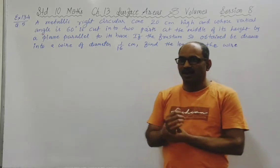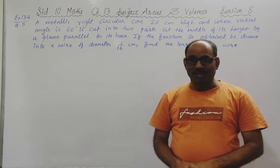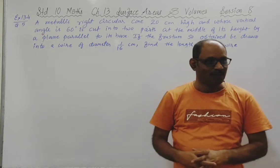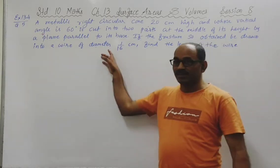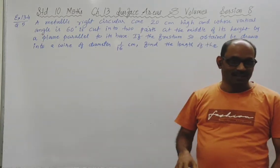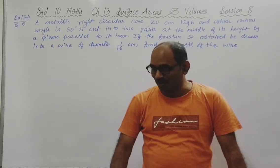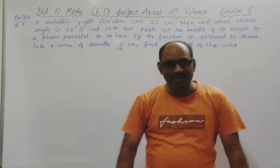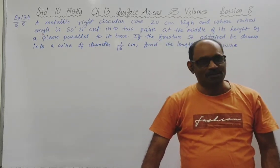So here we are with the final example of exercise 13.4, the fifth one. Before that we derived the formula to find the curved surface area, total surface area, and volume of frustum of cone. But if we use that knowledge it is going to be very lengthy. So instead we will use trigonometry, and we can get the answer very quickly.